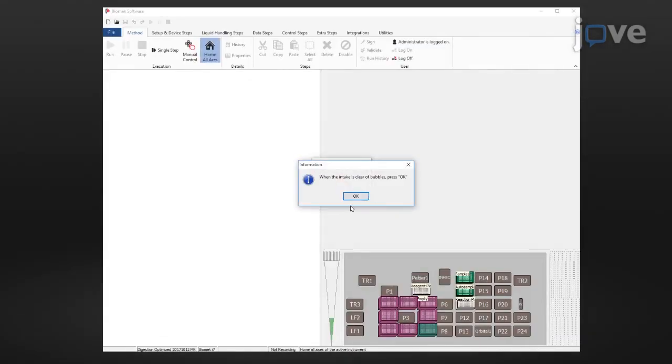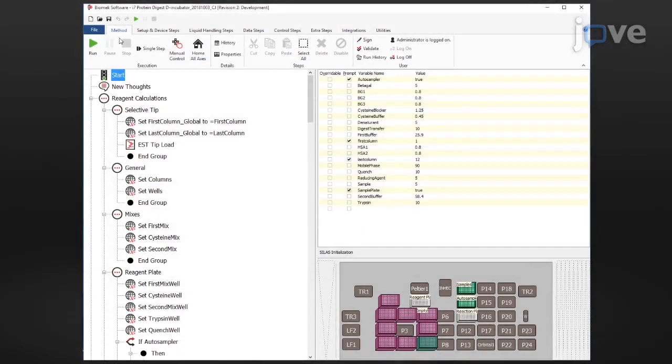Confirm that all of the workstation syringes contain no visible air bubbles, and open a new method and click Run to initiate the method.